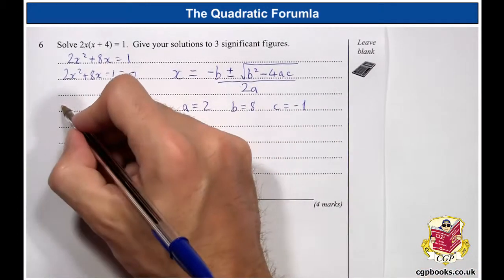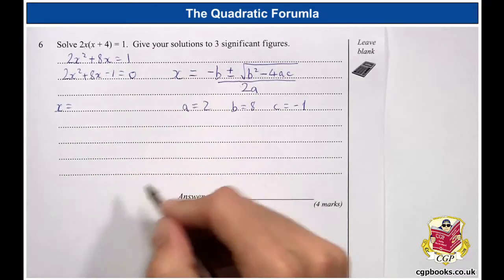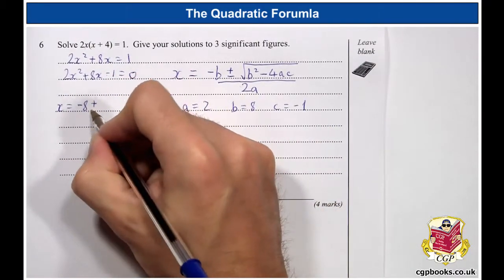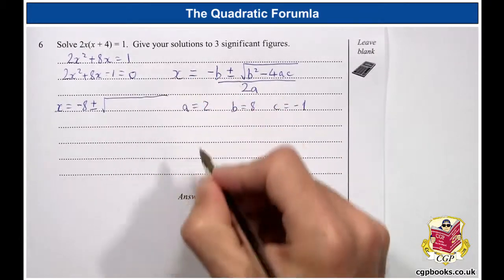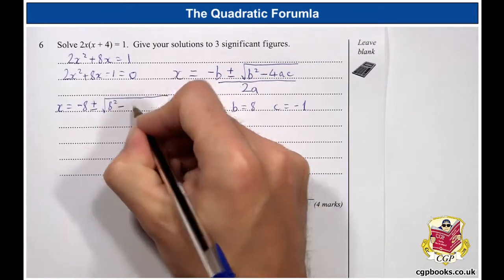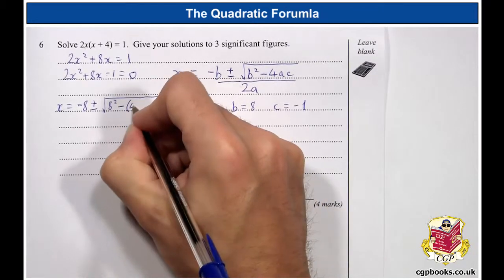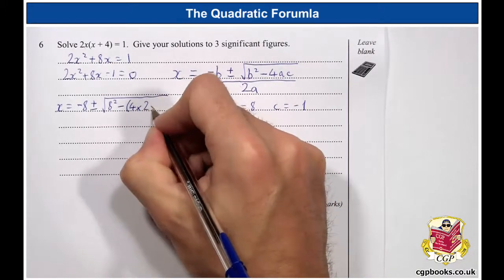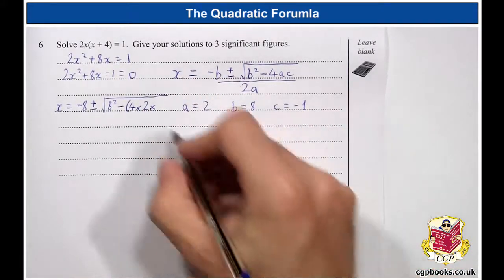So, now we put it into the formula. So, x equals minus b, minus 8, plus or minus the square root of b squared. So, that's 8 squared minus 4ac. 4 times a, which is 2, times c, which is minus 1.